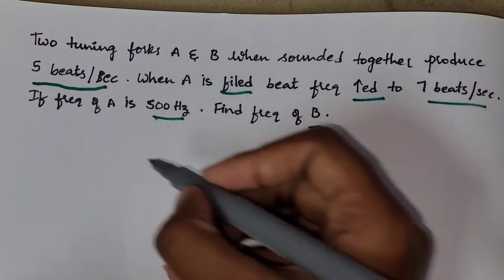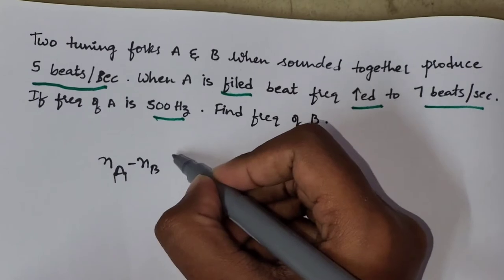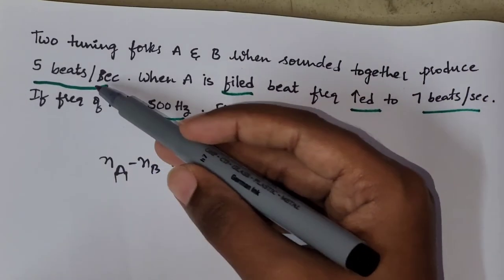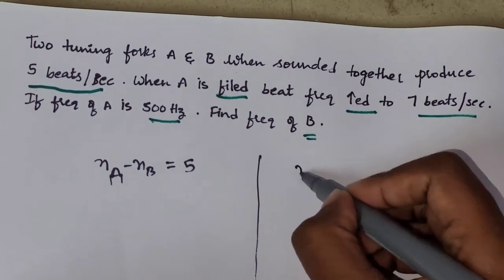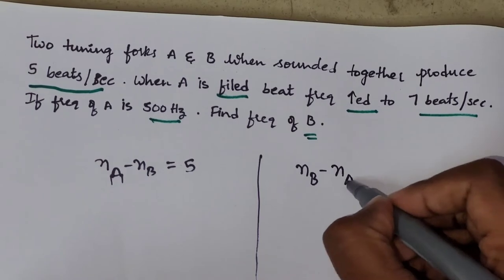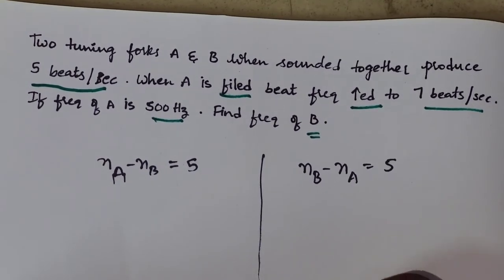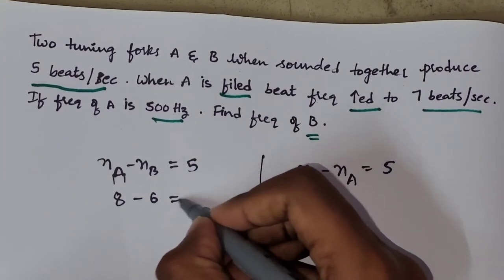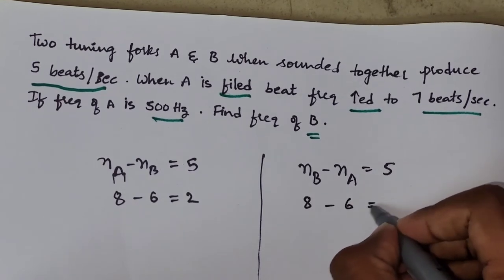First, write down like this. NA minus NB equal to 5. They said 5 beats per second, right? In other side, you have to write NB minus NA equal to 5. Now, the first step is write 8 minus 6 equal to 2 and 8 minus 6 equal to 2.